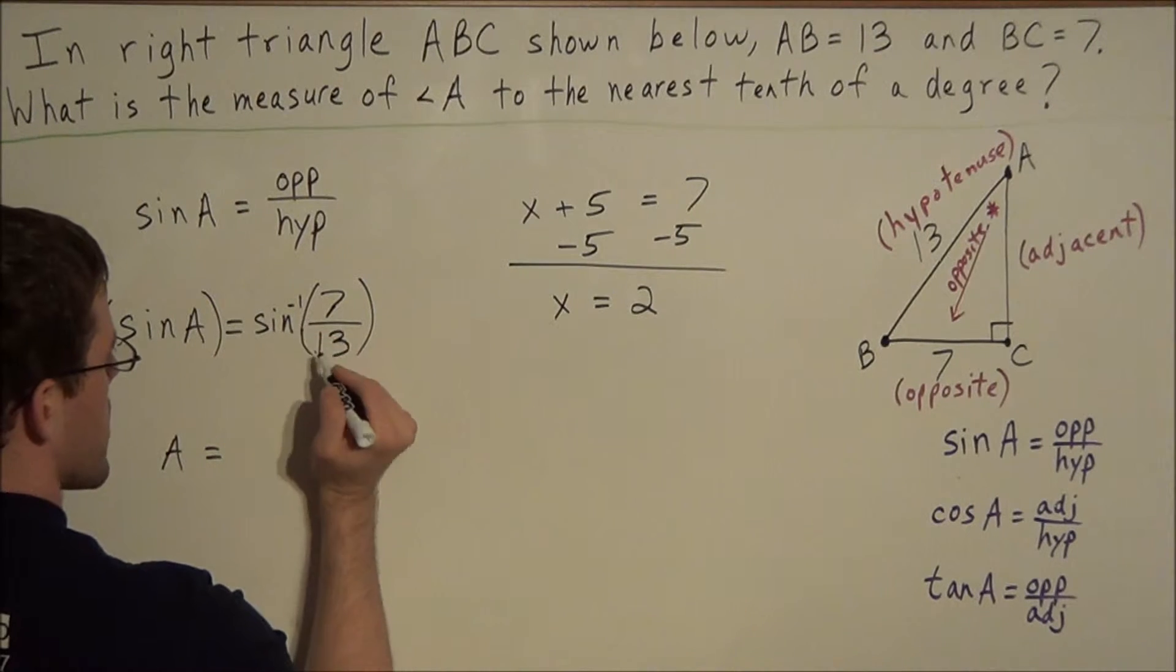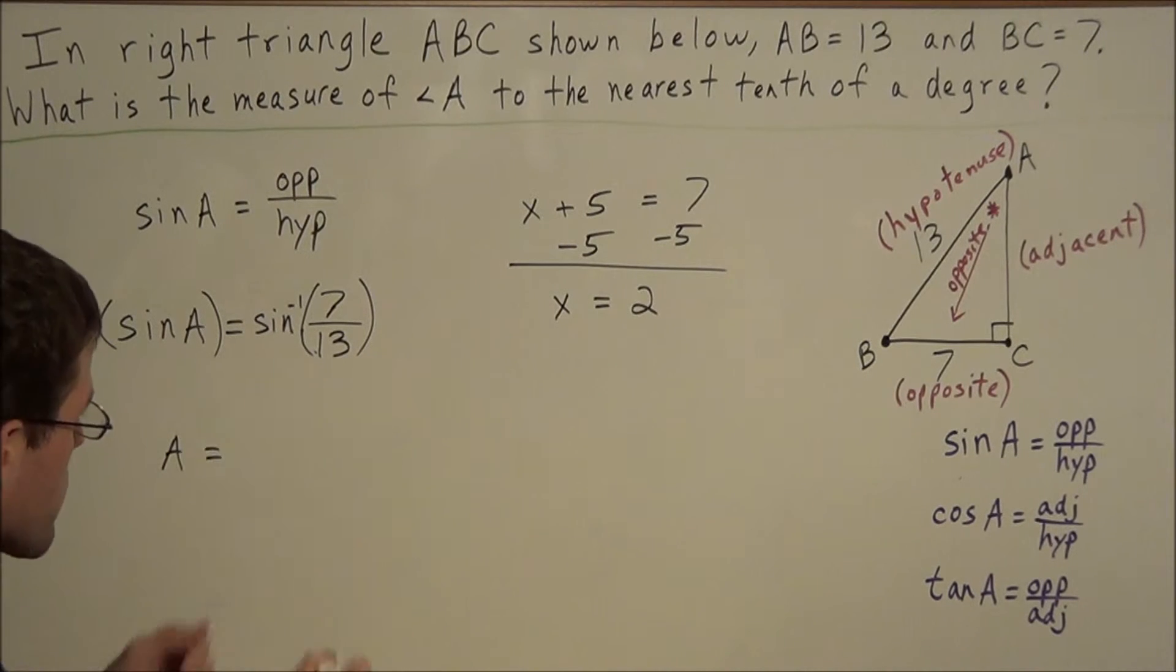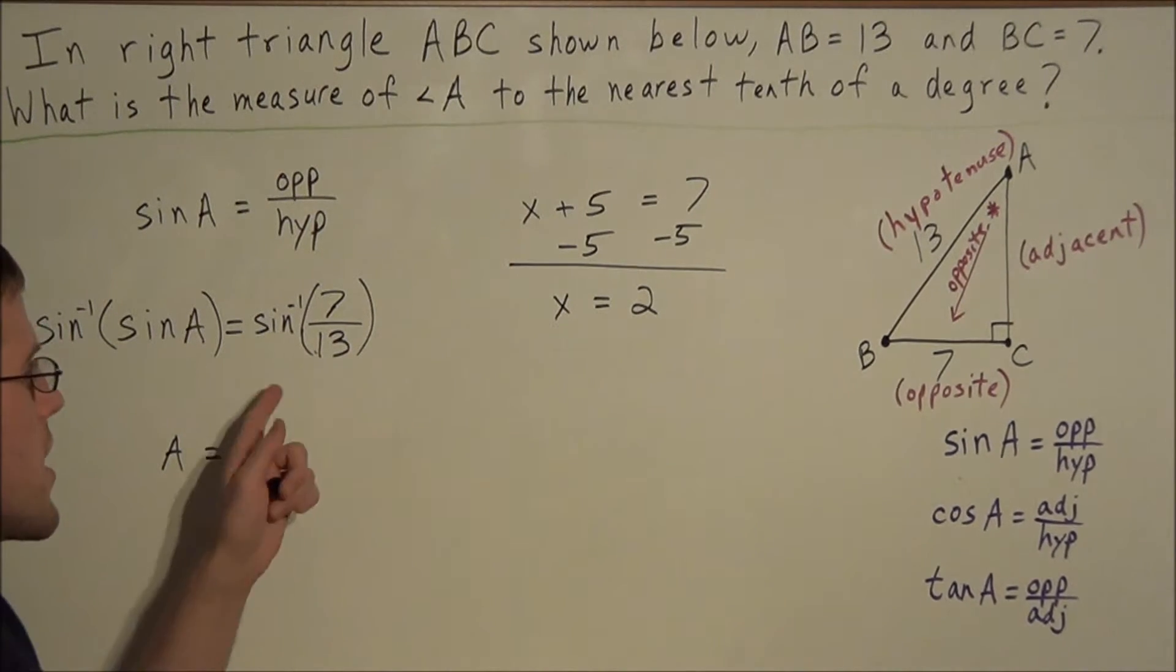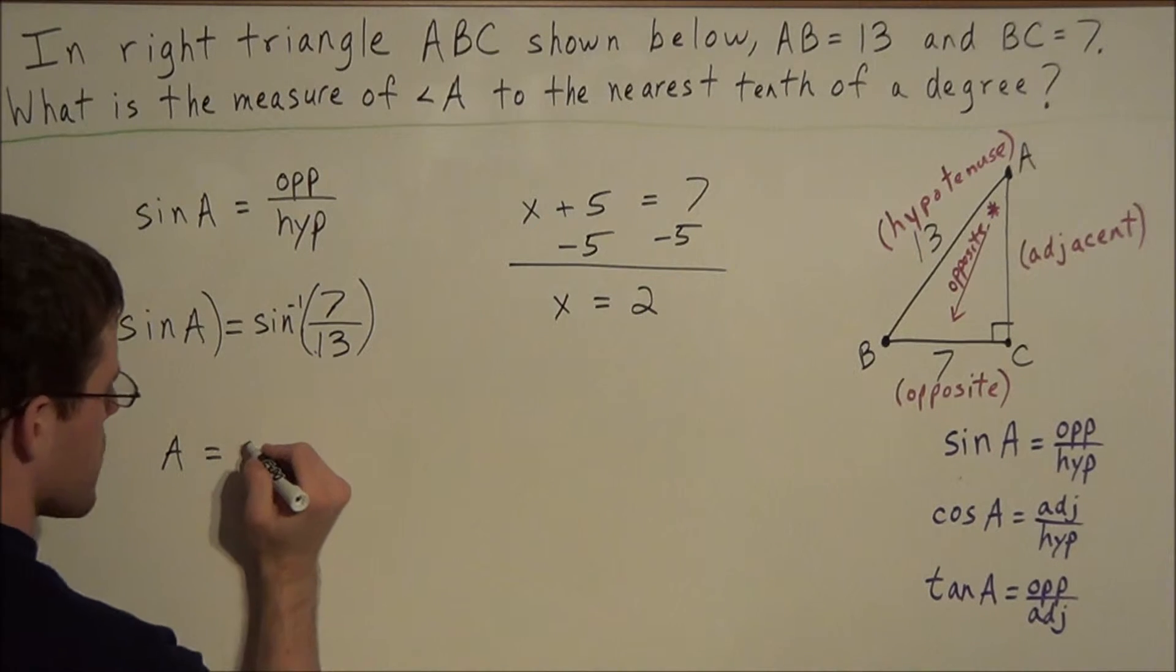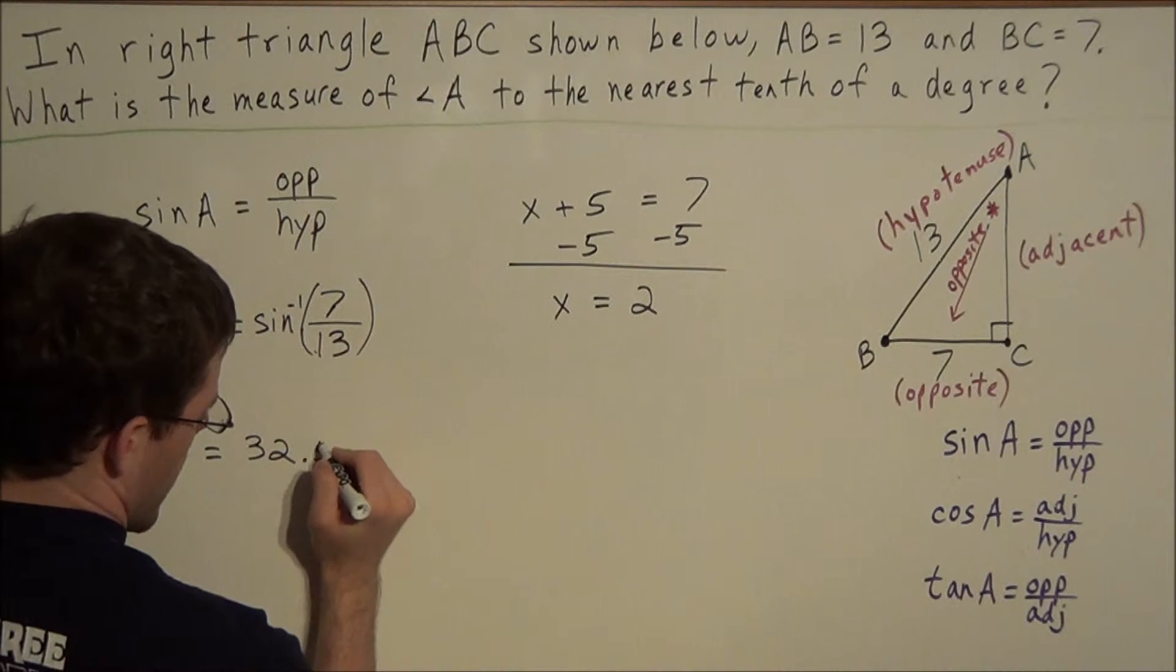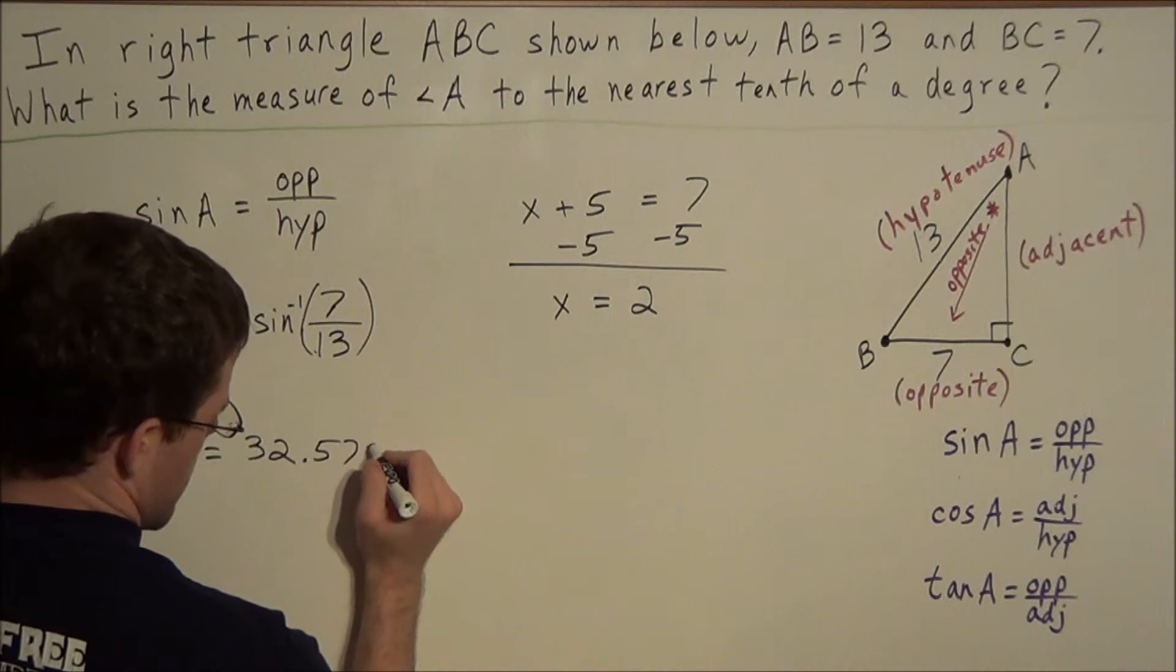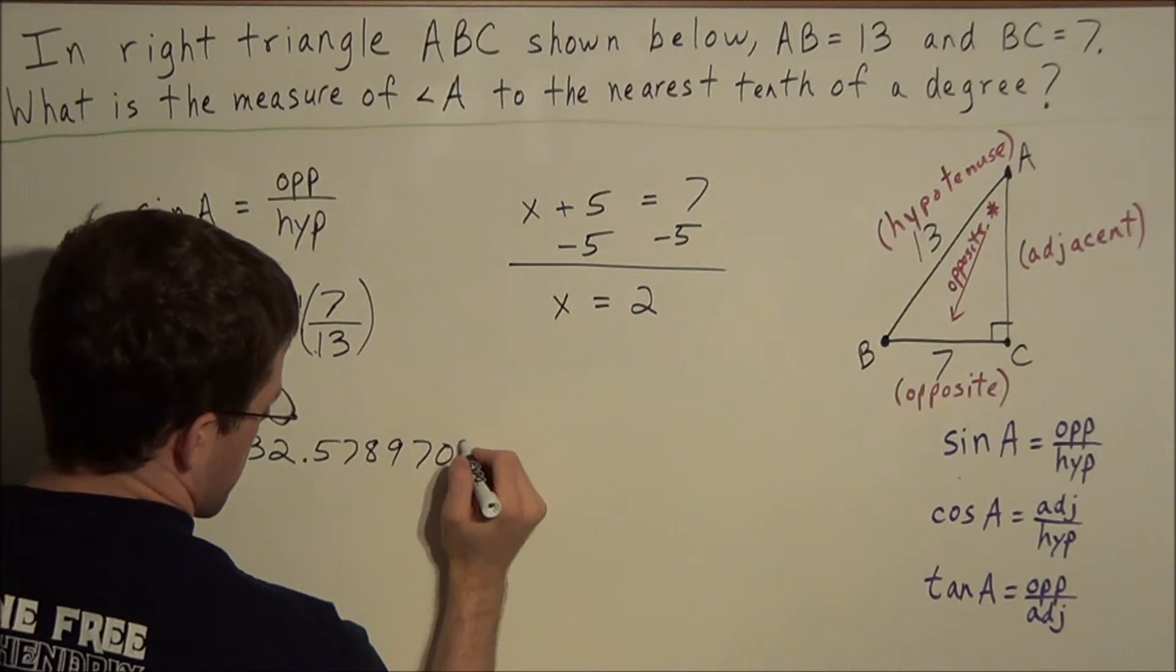So we're taking the sine inverse of 7 over 13. So if you punch this expression into a calculator, sine inverse of 7 over 13, it should give you 32.57897039.